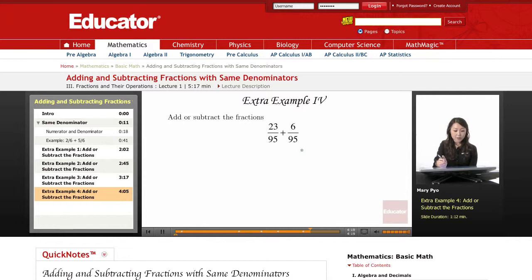Whenever I add or subtract fractions, I have to make sure that the denominators for both fractions are the same. So in this case, the denominator is 95, and for this one, the denominator is 95. Since they're the same, I can go ahead and add the fractions together.